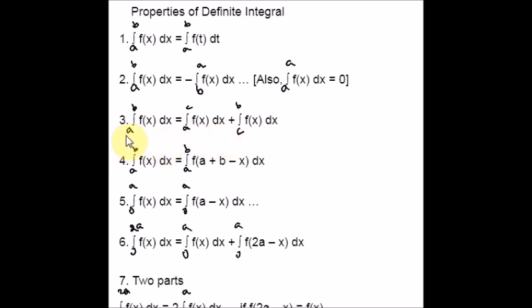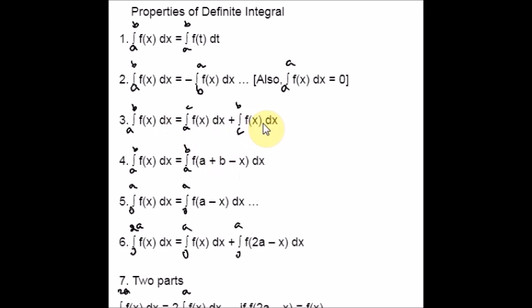The third property is just splitting the integral into two. Here, the limit is given as a to b of f(x) dx. You can take any point in between the interval a to b and split this integral into two. For example, taking it as c, you get the integral from a to c plus the integral from c to b. Does this make sense to you?